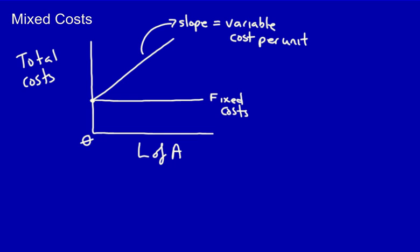In this case, if we produce a thousand units, this will be our total cost. That total cost will be made up of both the variable costs and the fixed cost component. Mixed costs are a mix of both variable and fixed costs.